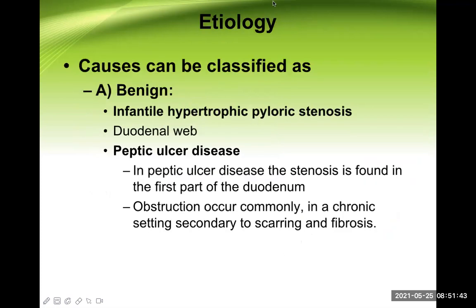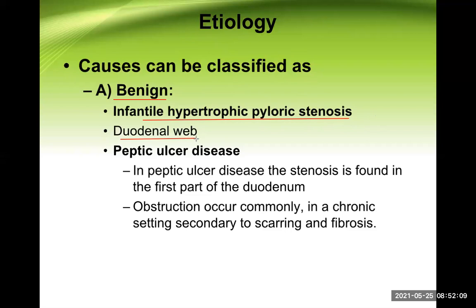The causes can be classified as benign and malignant. In babies, benign causes include infantile hypertrophic pyloric stenosis. There is also duodenal web — a congenital membrane-like structure in the first part of the duodenum acting as an obstructed area. The important benign cause is peptic ulcer disease, where stenosis is found in the first part of the duodenum, because the duodenal cap is the site for duodenal ulcer.